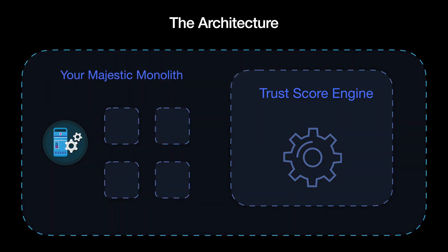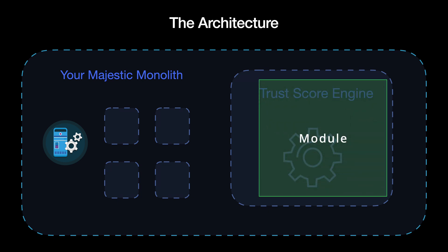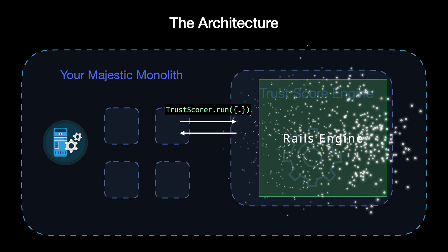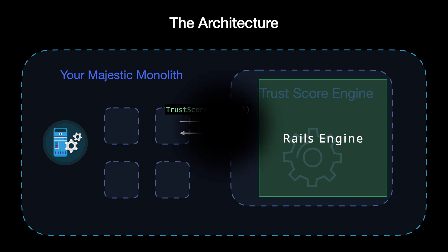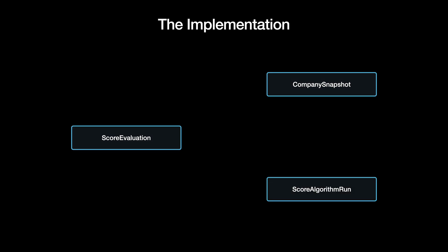You don't necessarily need to create a separate service — you could implement this within your existing app. Depending on the technology and libraries you are using, you could isolate the logic in a module or, if you are using Rails, in an engine. With this architecture and a well-planned implementation, you can migrate to a separate service later if the need arises. Now let's discuss some key aspects of the implementation, starting with our entities and relationships. We have a company snapshot, a score evaluation, and a score algorithm run.